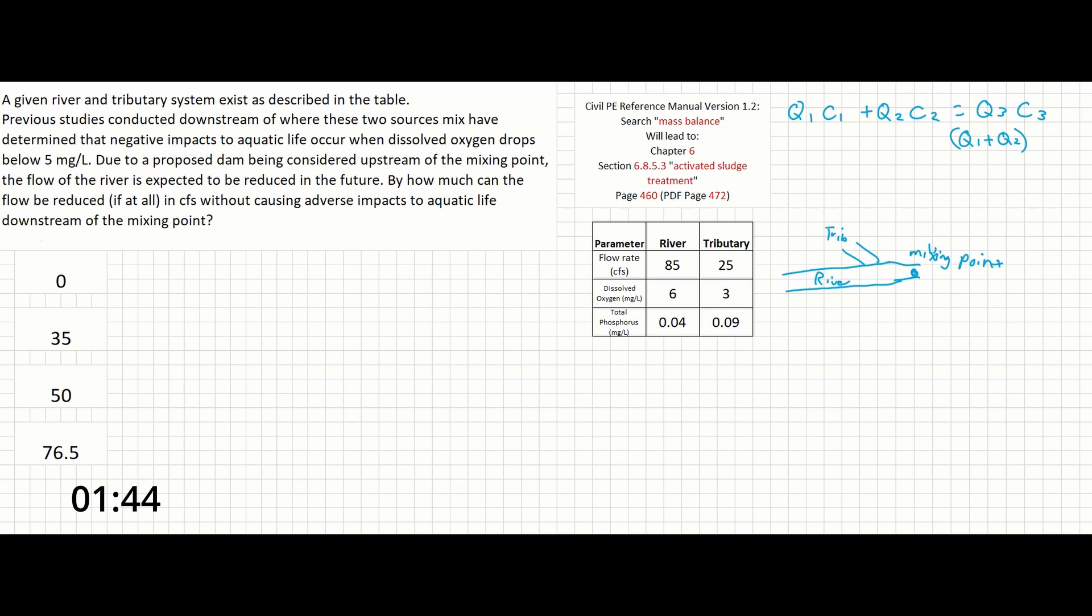Let's begin. The problem is asking us to find how much flow in the river can be reduced upstream of the river and tributary mixing point before the section of the river downstream of the mixing point drops below 5 mg per liter of dissolved oxygen. They want to know how much can change up here such that down here doesn't drop below a certain point.